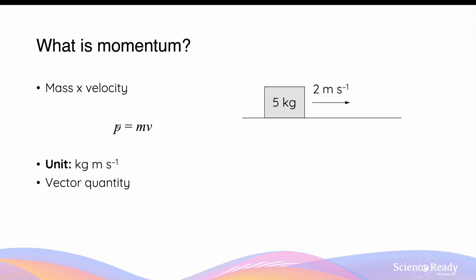Since momentum is dependent on the velocity of the object, which is a vector quantity, momentum itself is also a vector quantity. This means you need to provide the magnitude and units as well as the direction when calculating the momentum of an object.